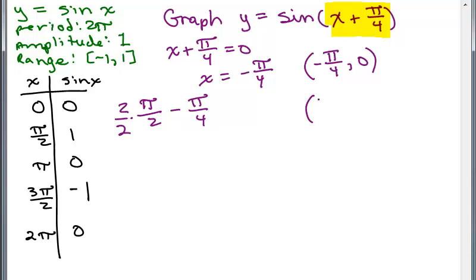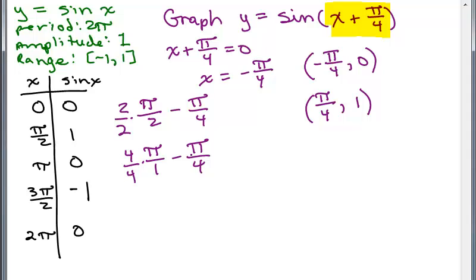So here's another ordered pair: I'm going to choose π/4 for my x coordinate. If you put π/4 in, π/4 plus π/4 adds up to 2π/4, which is π/2. And then I take the sine of π/2, which gives me 1. Continuing, I take π minus π/4. I need a common denominator, so I multiply by 4/4. I've got 4π minus π in the numerator, giving me 3π/4. When you plug in 3π/4 for x, you have 3π/4 plus π/4, that's 4π/4, or π. And the sine of π is 0.